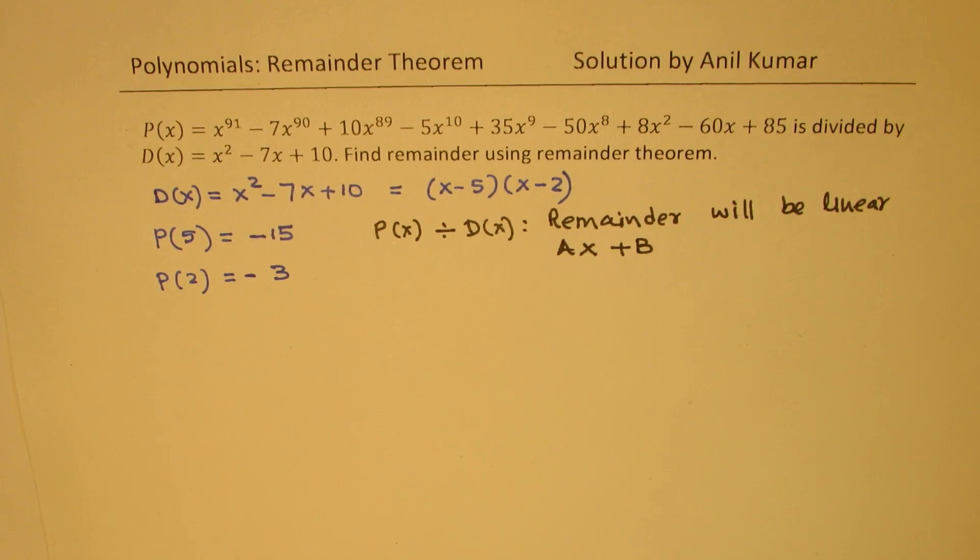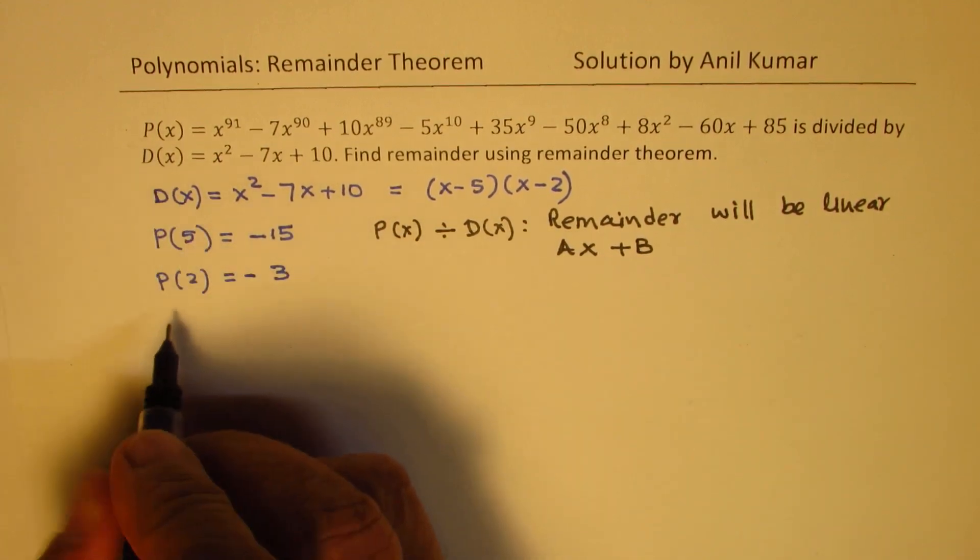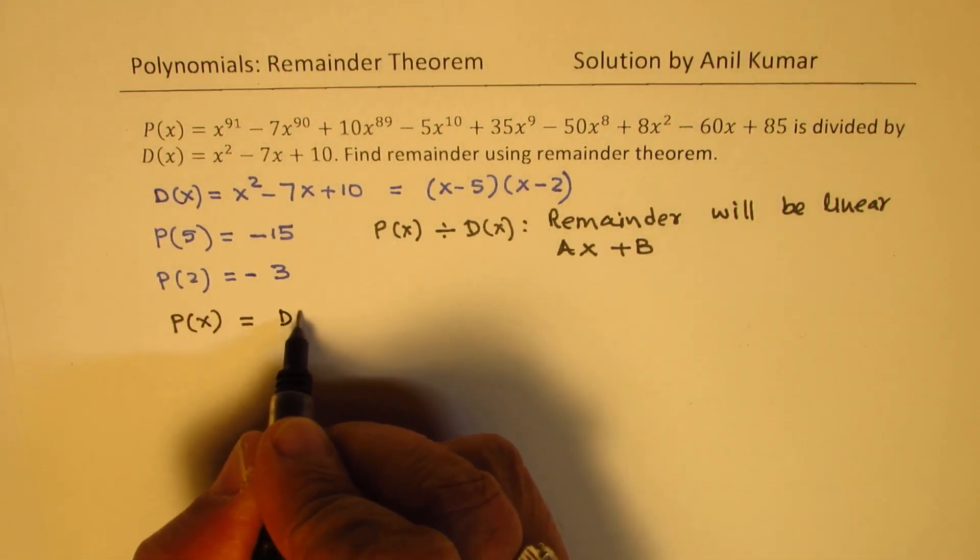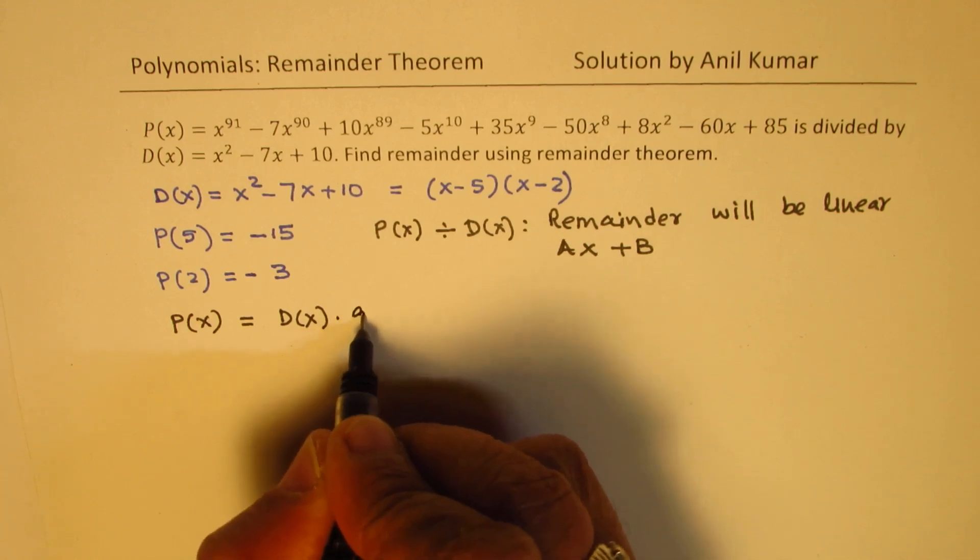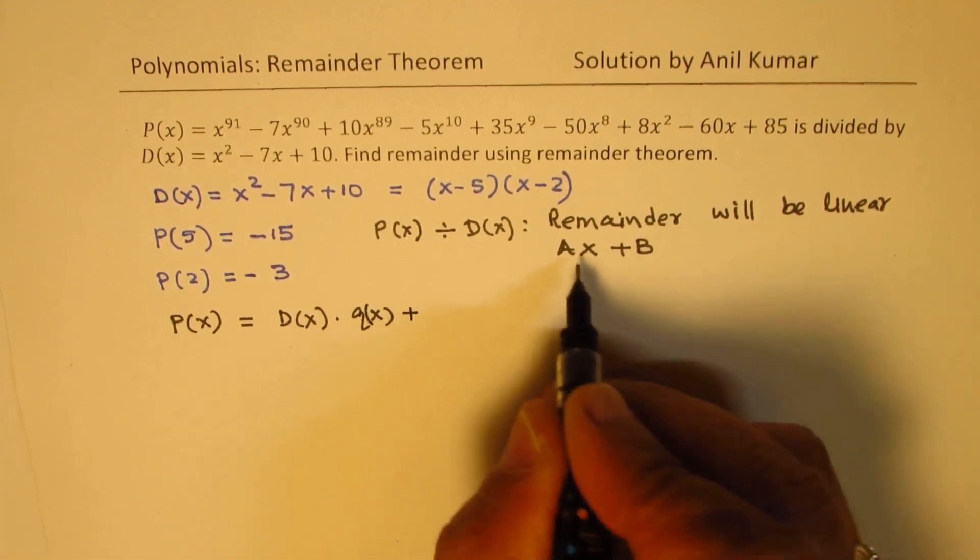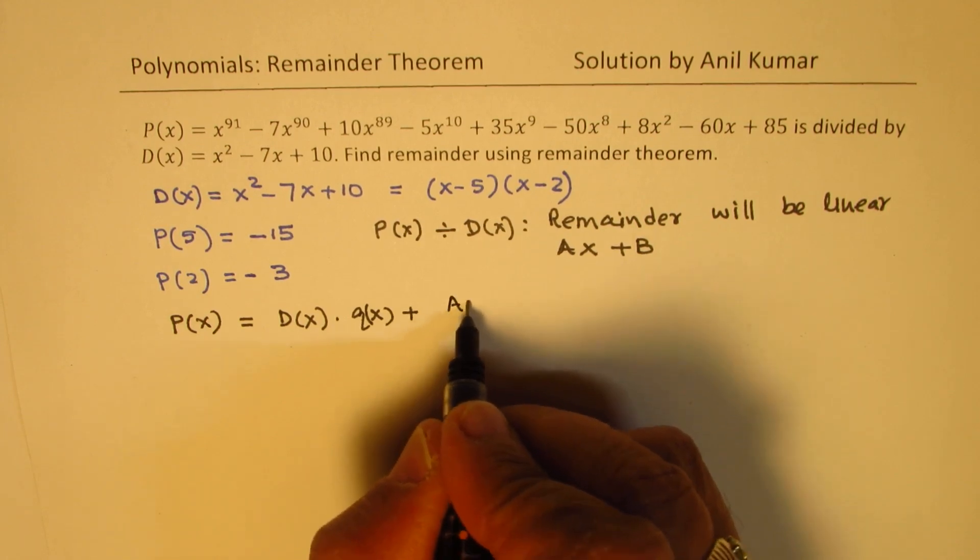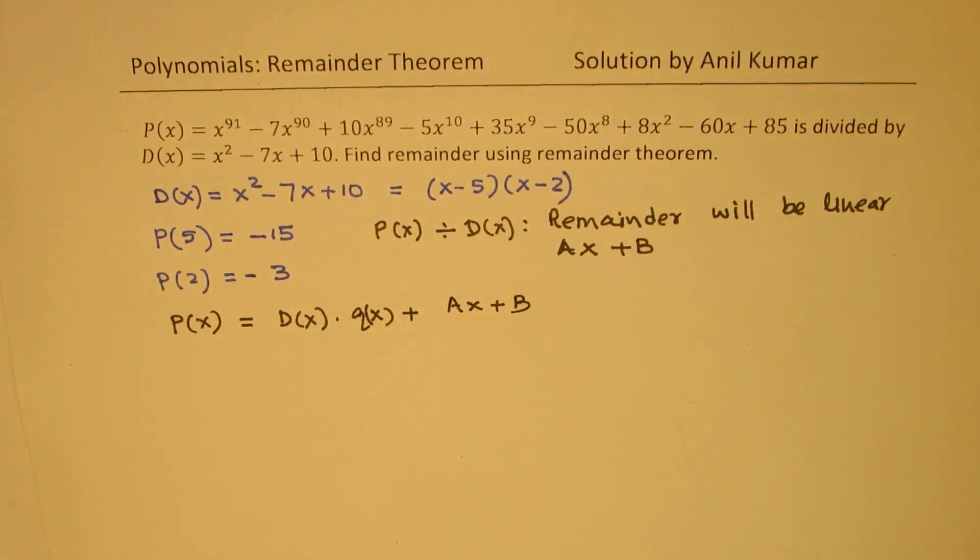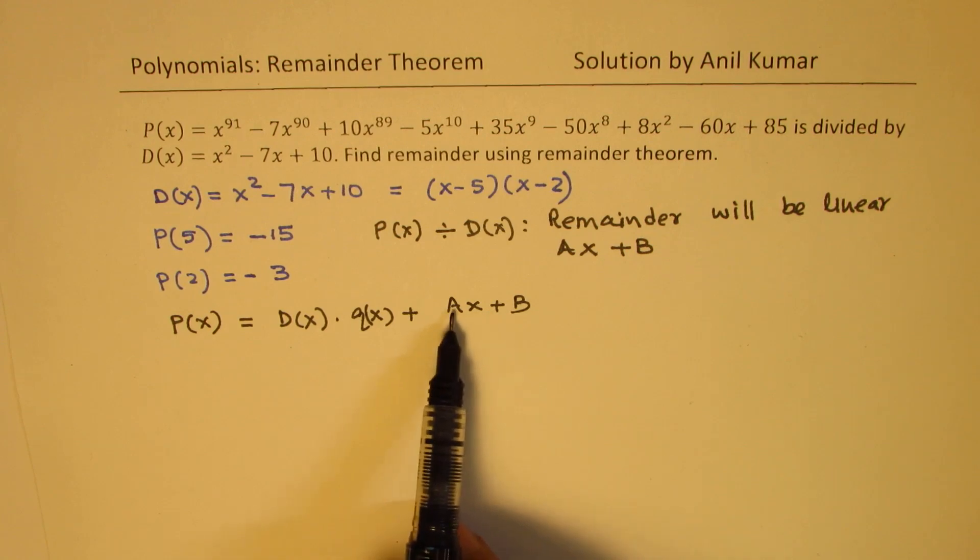So that is going to be the remainder. So now we can write this polynomial, P(x), as equal to divisor times the quotient plus the remainder, which is Ax plus B. It does make sense to you, right? So whenever you divide, you can always write the polynomial as product of divisor and quotient, and the remainder, which is Ax plus B.